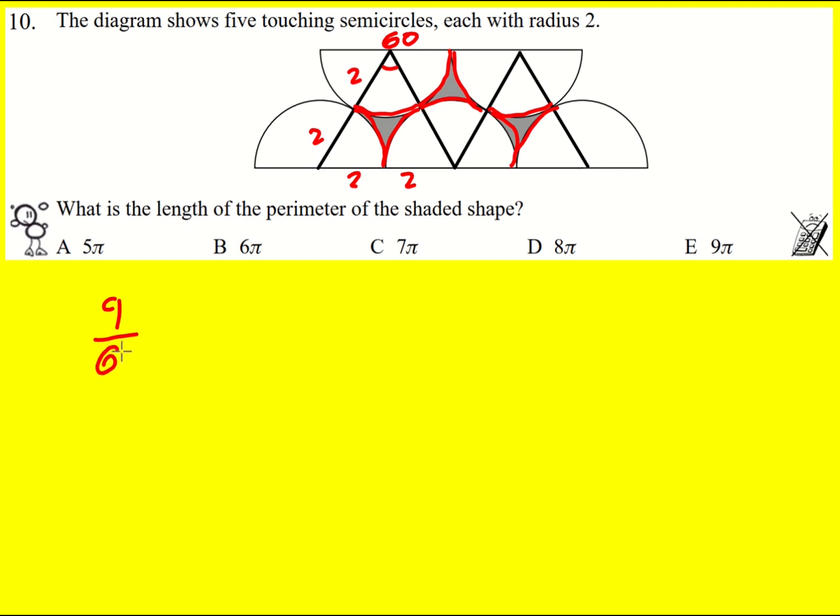So we actually have nine-sixths which is three over two of a circle.